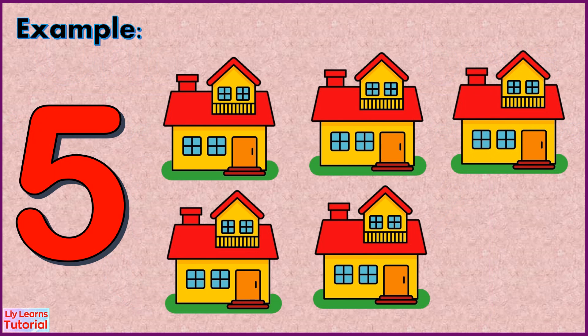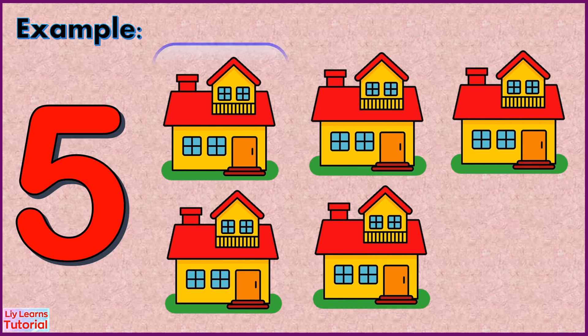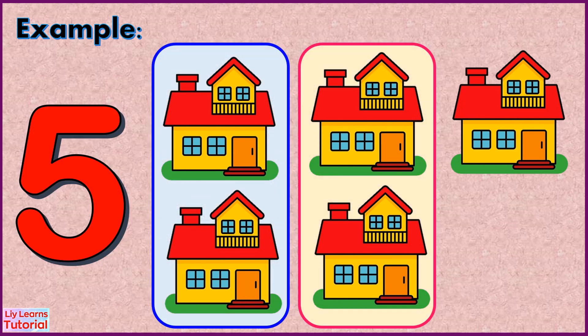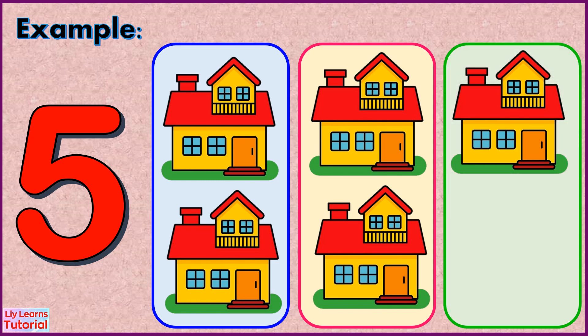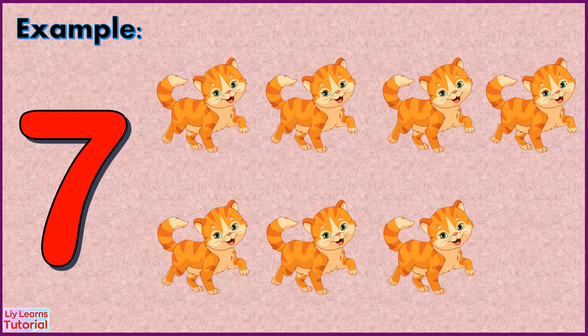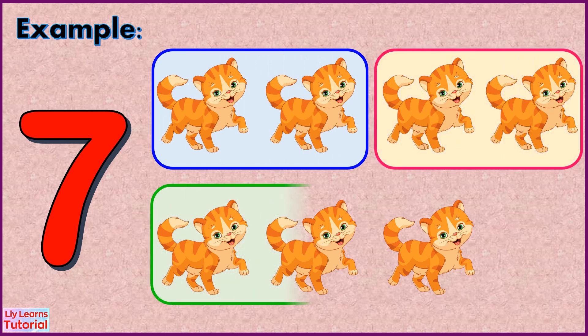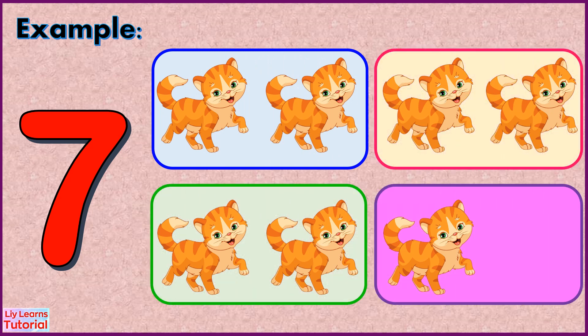Let's have some more examples. The number five can be divided into two groups of two and one group of one. The number seven can be divided into three groups of two and one group of one.